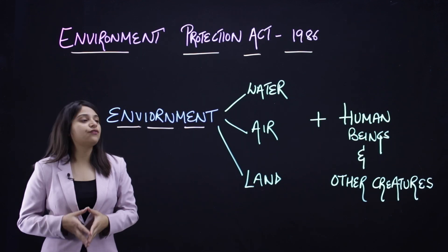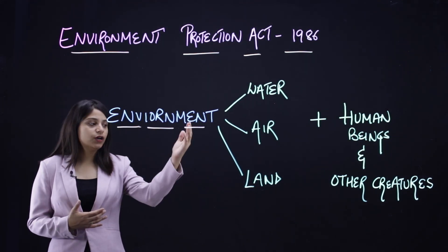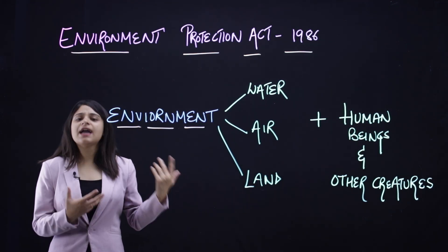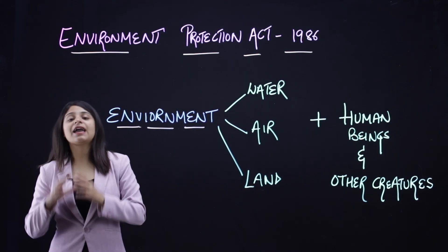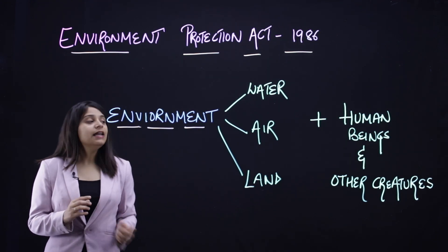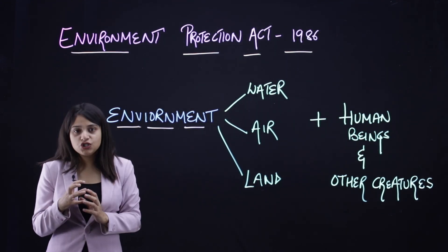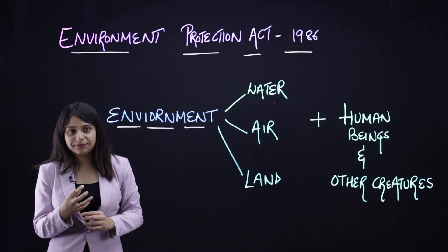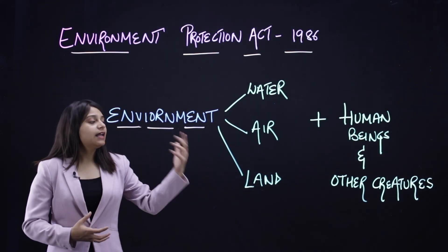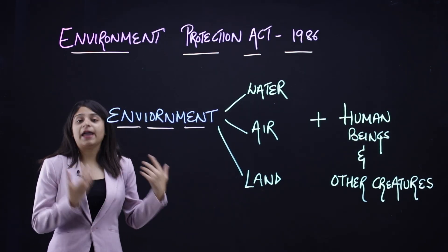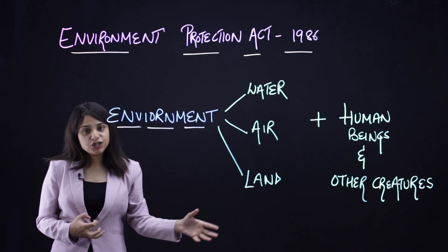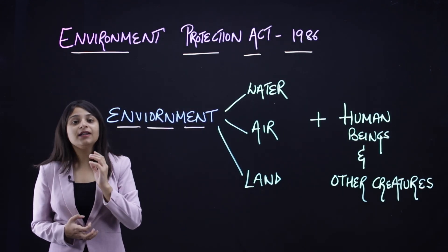This act defines environment as including water, air, land, plus human beings and other creatures, animals — everything. Abiotic and biotic, physical and non-physical things. The inter-relationship and interconnectedness between human beings, water, air, land, other creatures, and microorganisms — all of this together is what the act says environment means and includes.